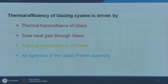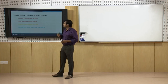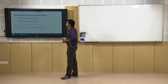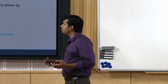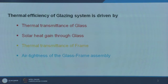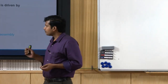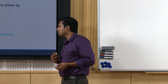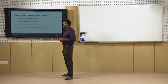The next important factor is solar heat gain through glass. This is an important factor which ranges from 0 to 1. It tells you how much radiant heat gets into the system apart from the conductive heat transfer. Next is thermal transmittance of the frame, which is no less important than the glass itself. Also crucial is the air tightness of the glass frame assembly — how well your glazing system is sealed. If you have a lot of infiltration, you will have unintended heat gains and losses.